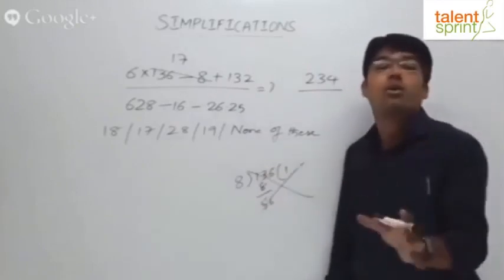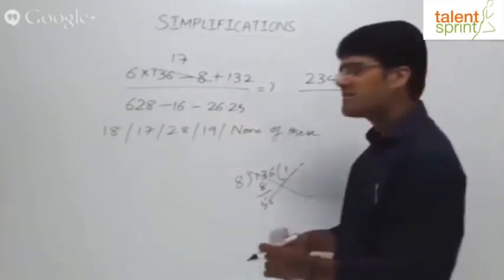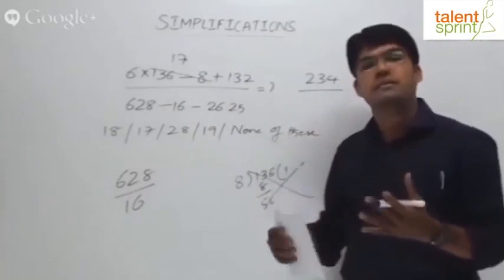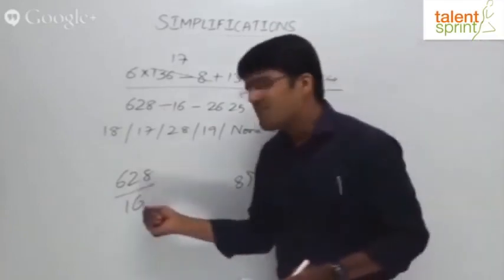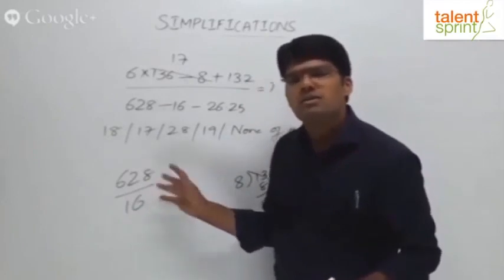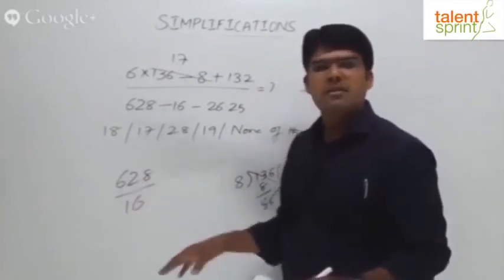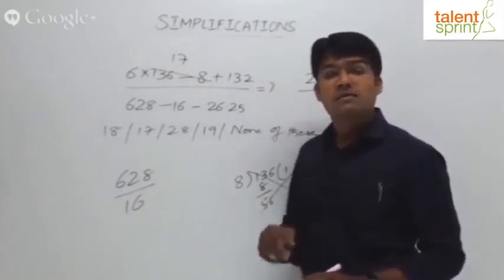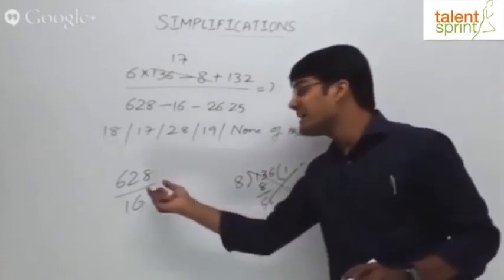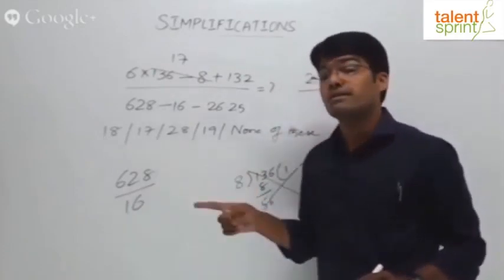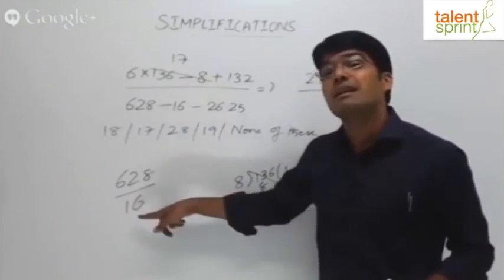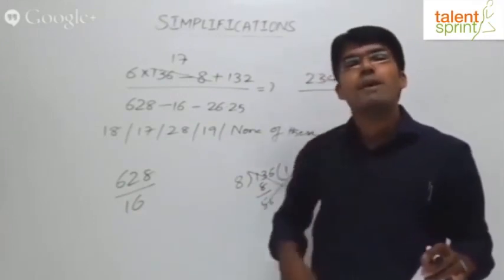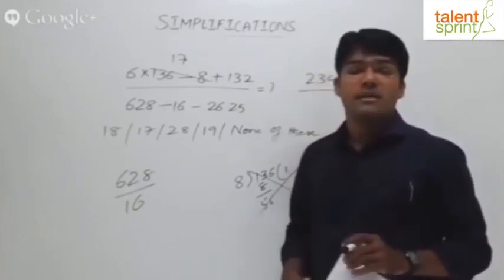What do you do? Split the numerator: 628 by 16. The logic is to always split the numerator in terms of some multiple of the denominator. 628 can I take as 640 minus 12. Why 640 minus 12? Why can't I take it as 600 plus 28? Because 640 is a multiple of 16. 16 into 4 is 64, 16 into 40 will be 640. So the idea is to break the numerator in a way that at least one part is some multiple of the denominator.